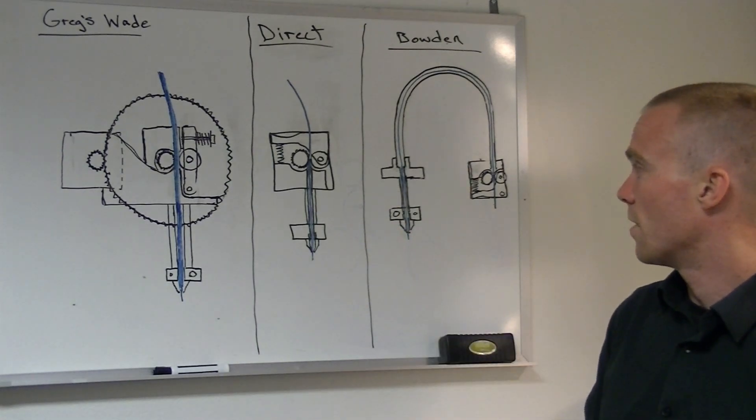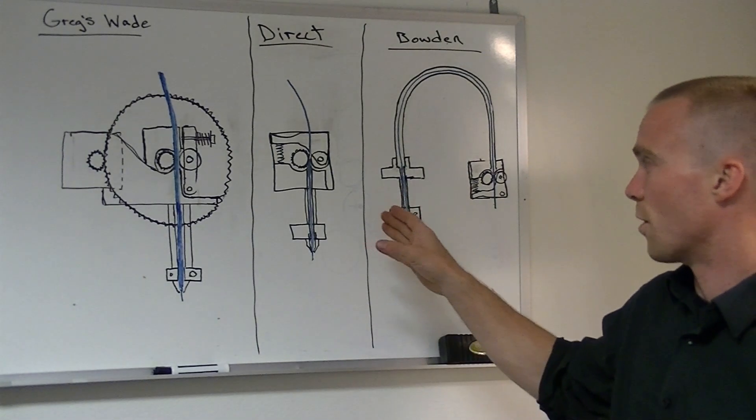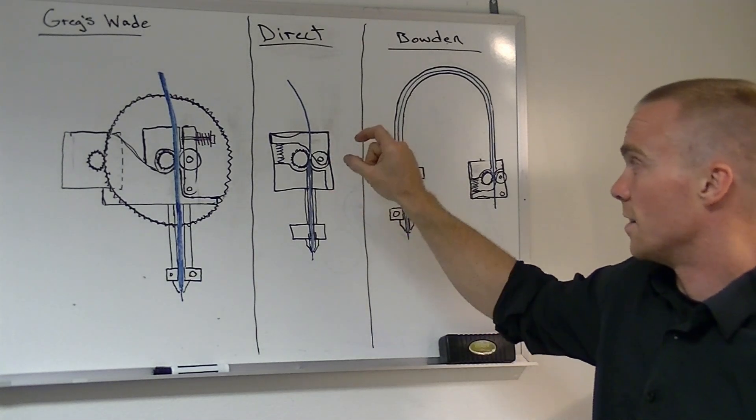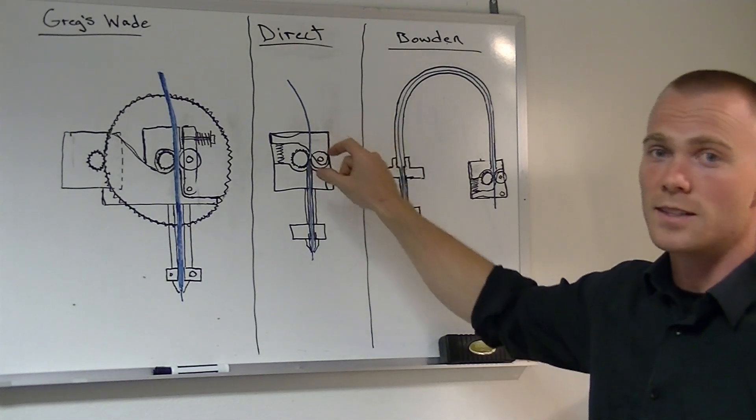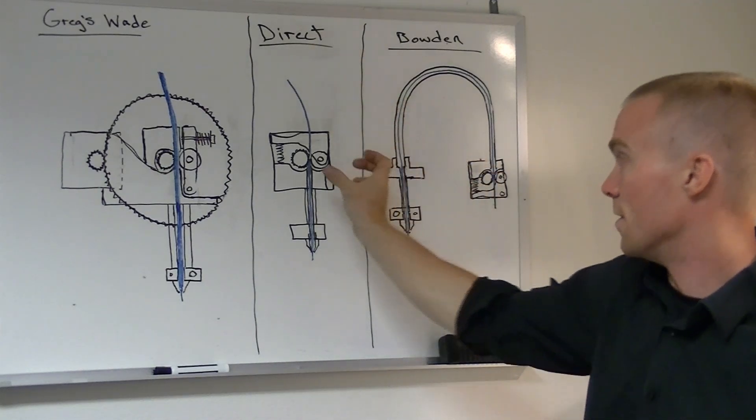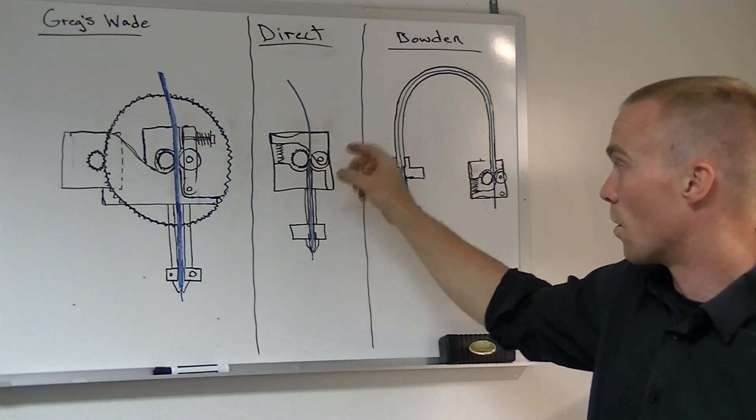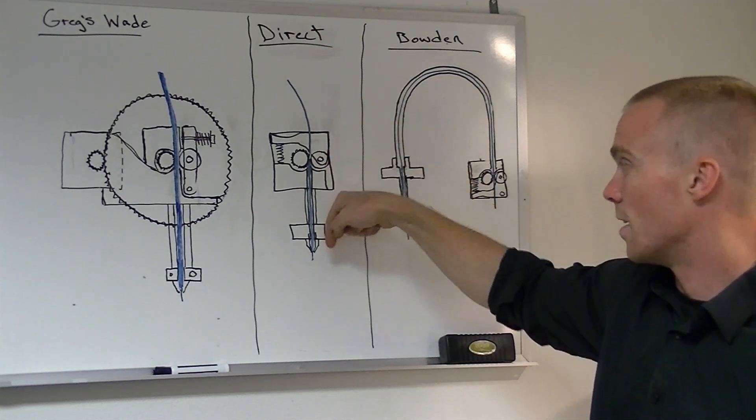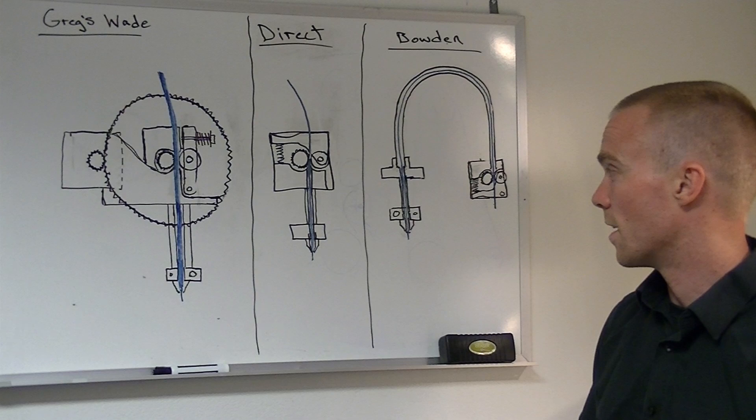Starting out with the direct drive here, this is the one that we've already been looking at. The name comes from the fact that the drive gear is mounted directly onto the shaft of the stepper motor and you have some spring-loaded arm with a roller bearing or something else creating a nip force against that drive gear and that's pushing the filament down into the hot end.